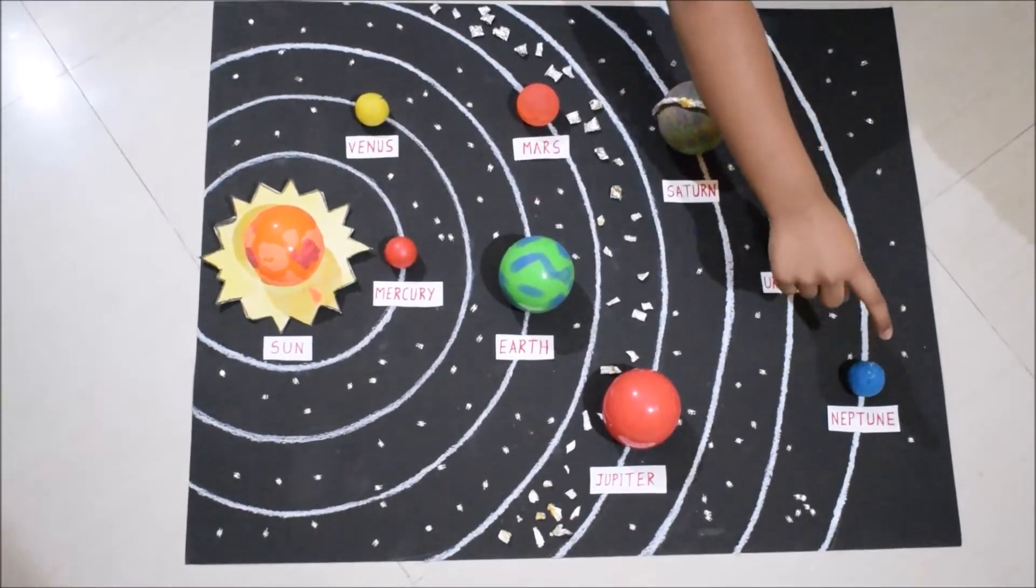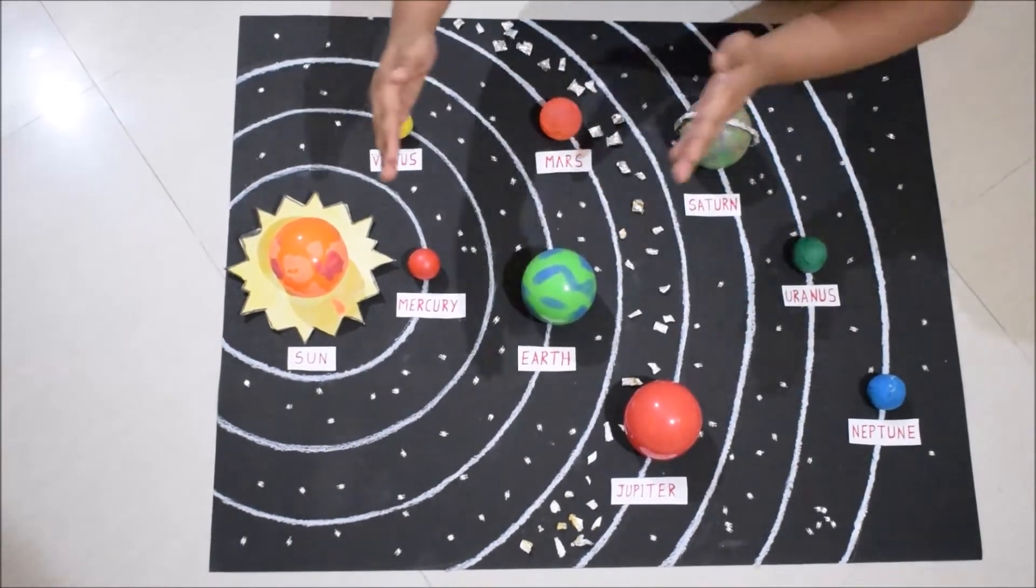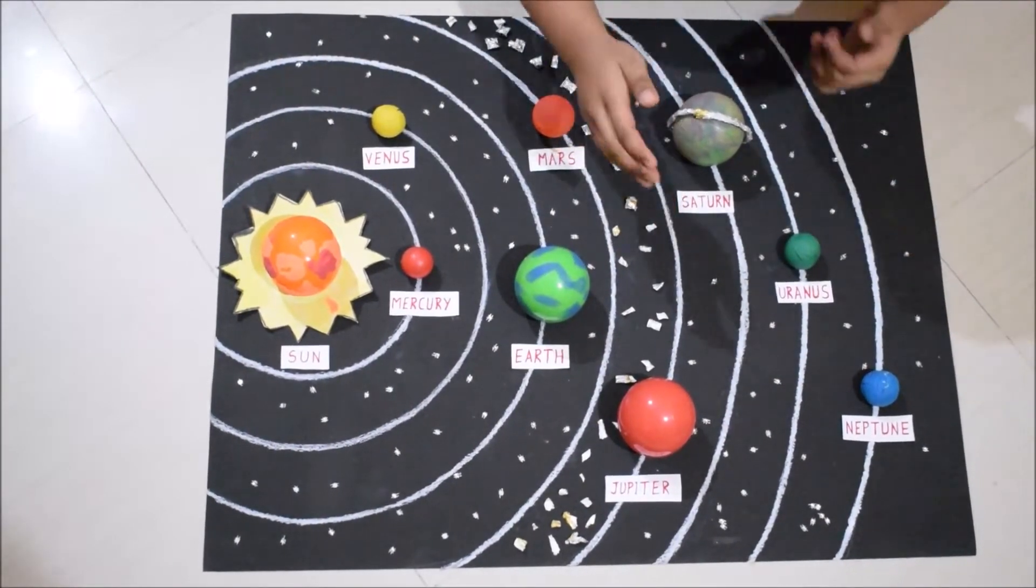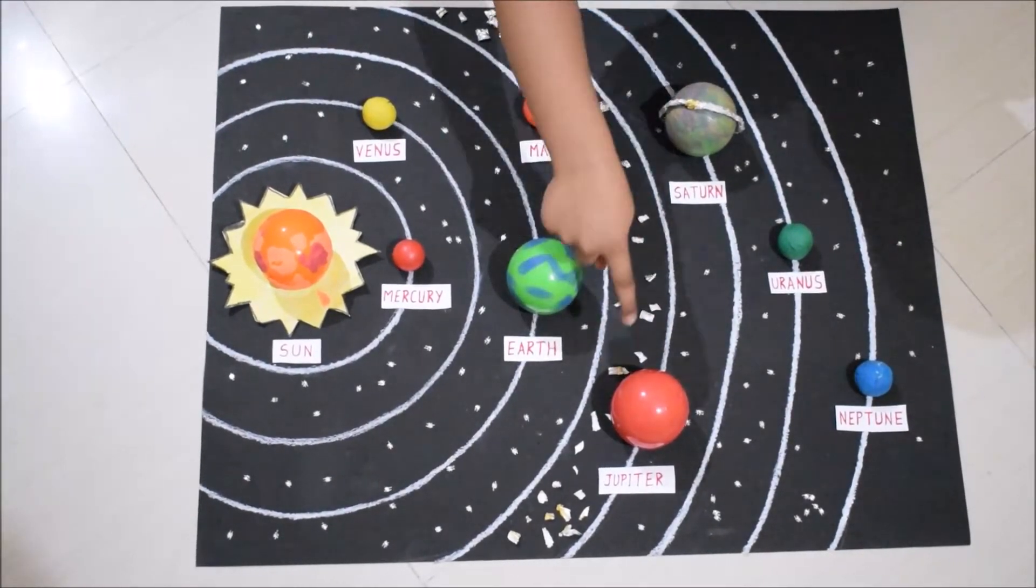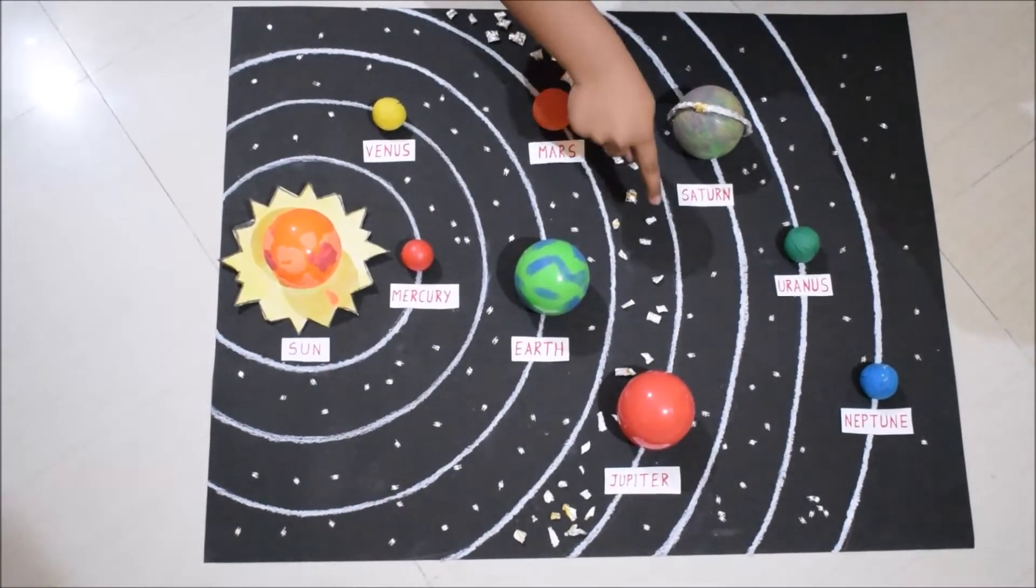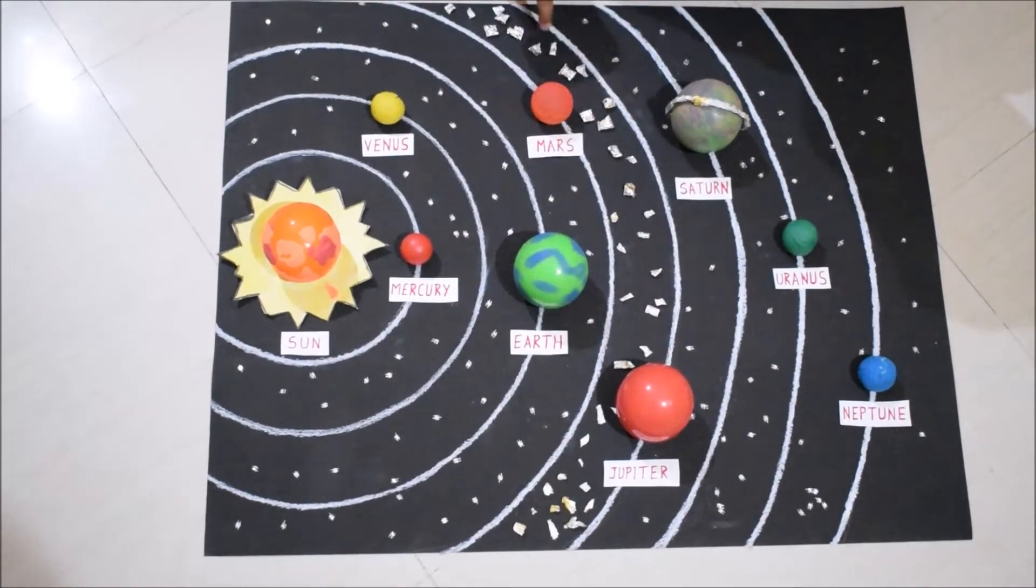Between the inner and outer planets, which is between Mars and Jupiter, there is an asteroid belt which has small rocky pieces called asteroids.